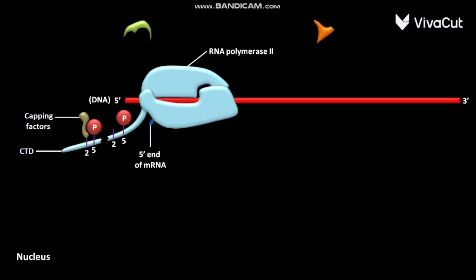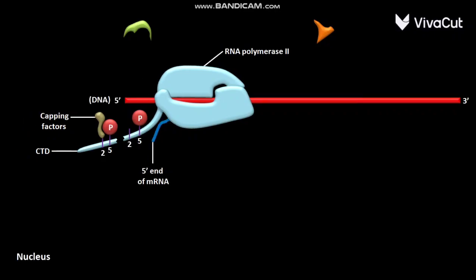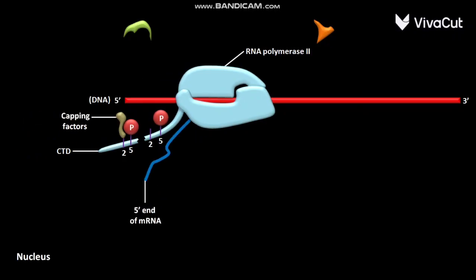As the RNA polymerase II continues transcription, an mRNA having 25 nucleotides is formed. At this stage, the capping factors bind to the 5' end of mRNA.